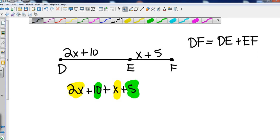Now they might take that one step further and maybe they show you or tell you that DF is actually 45. So if DF is 45, can we solve for x? Well, we know that this was DF, so all we have to do is take our 3x plus 15, set it equal to 45, and then solve a multi-step equation.